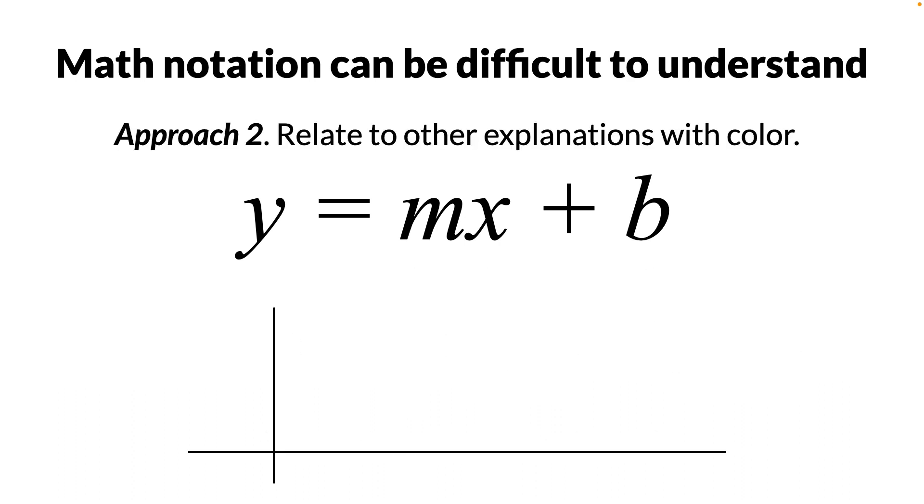Another approach involves relating the formula to another representation of the same mathematical idea using color. For instance, the formula can be colorized to relate it to this visualization, conveying through color that the height of the point can be computed by taking a constant vertical offset, then taking the horizontal position of the point, and scaling it to another vertical offset using m as a multiplier.